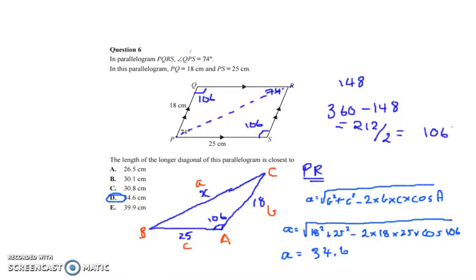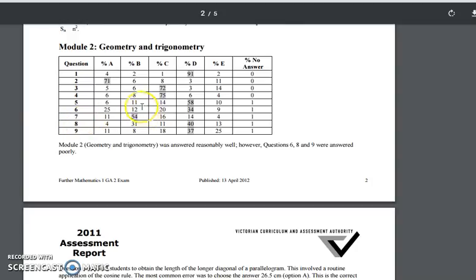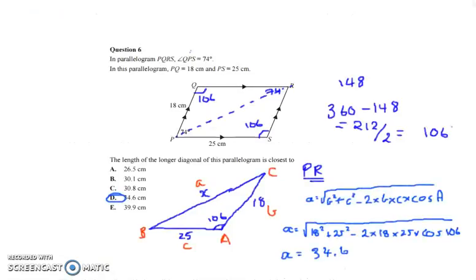Now let's have a look at the assessor's comments for this one. So question 6 in geometry and trigonometry, 34 percent got this correct. So once again, another poorly answered question for some very simple mathematical manipulation.